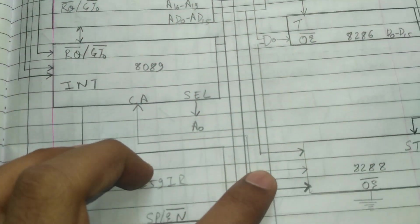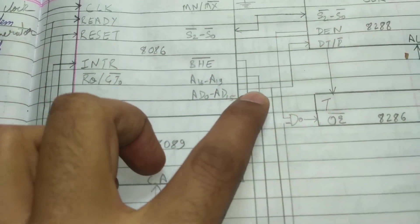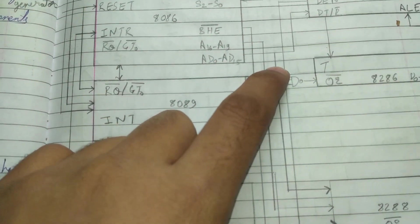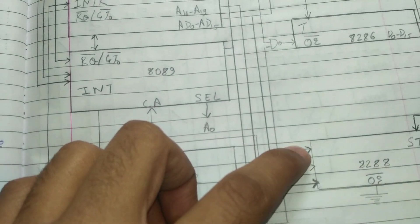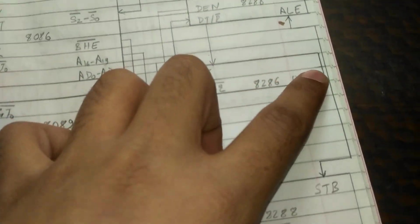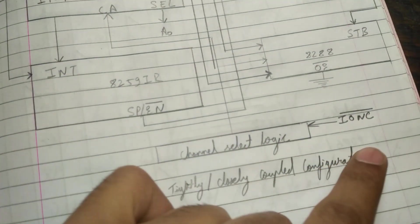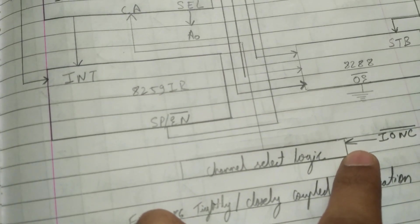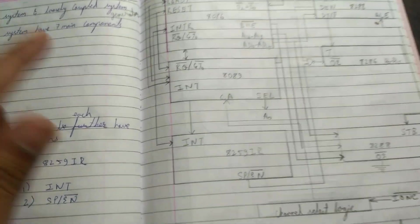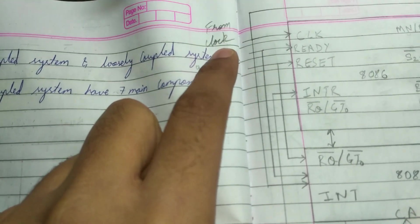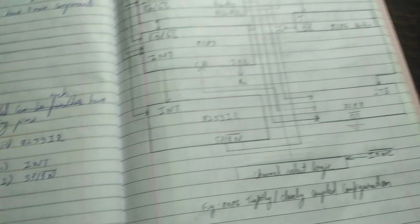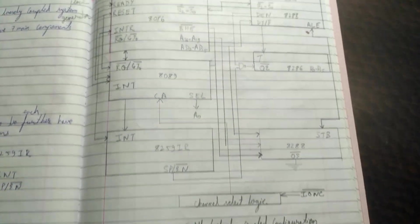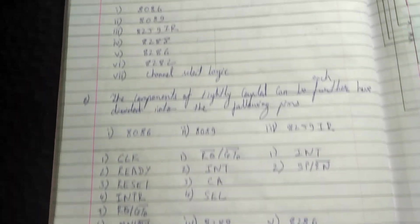A16 to A19 is connected with the second point of the 8282, and AD0 to AD15 is connected to DT slash R bar and also to the third point of the 8286. ALE is connected with the STB line. The channel select logic has an IOWC connection, and A0 to A15 comes from the clock generator. This is the 8086 tightly coupled, closely coupled configuration architecture, and I have shown you the easiest way to learn this architecture.